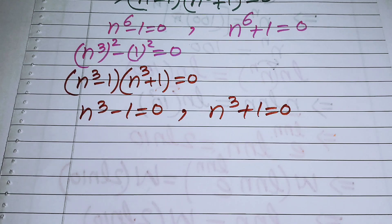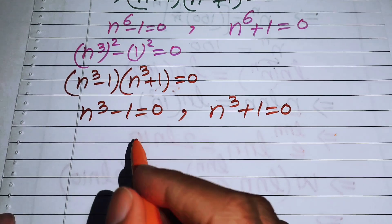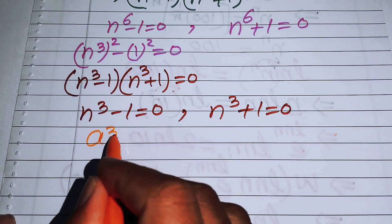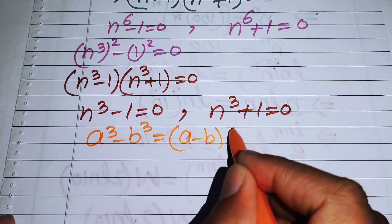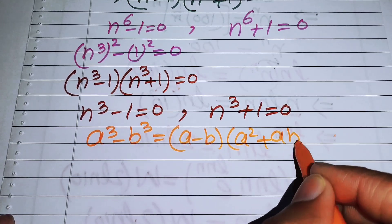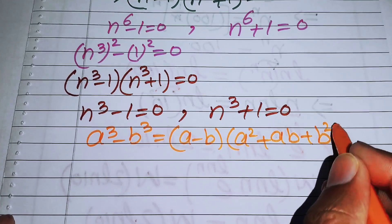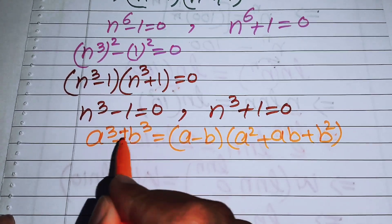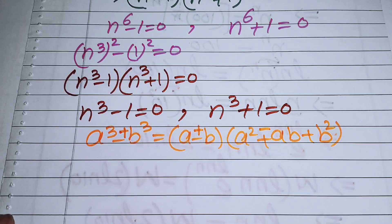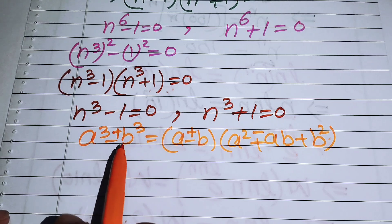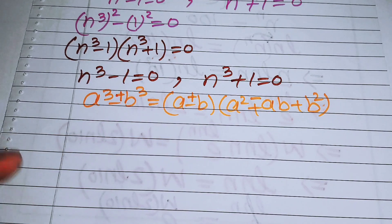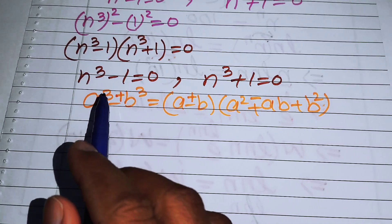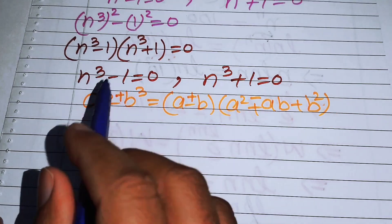Here we use both cubic formulas. You know that a cubed minus b cubed equals a minus b times a squared plus ab plus b squared. For the positive sign version, a cubed plus b cubed, we use the corresponding formula with the negative middle term. We can apply this positive and negative cubic formula on both terms to find the solutions.